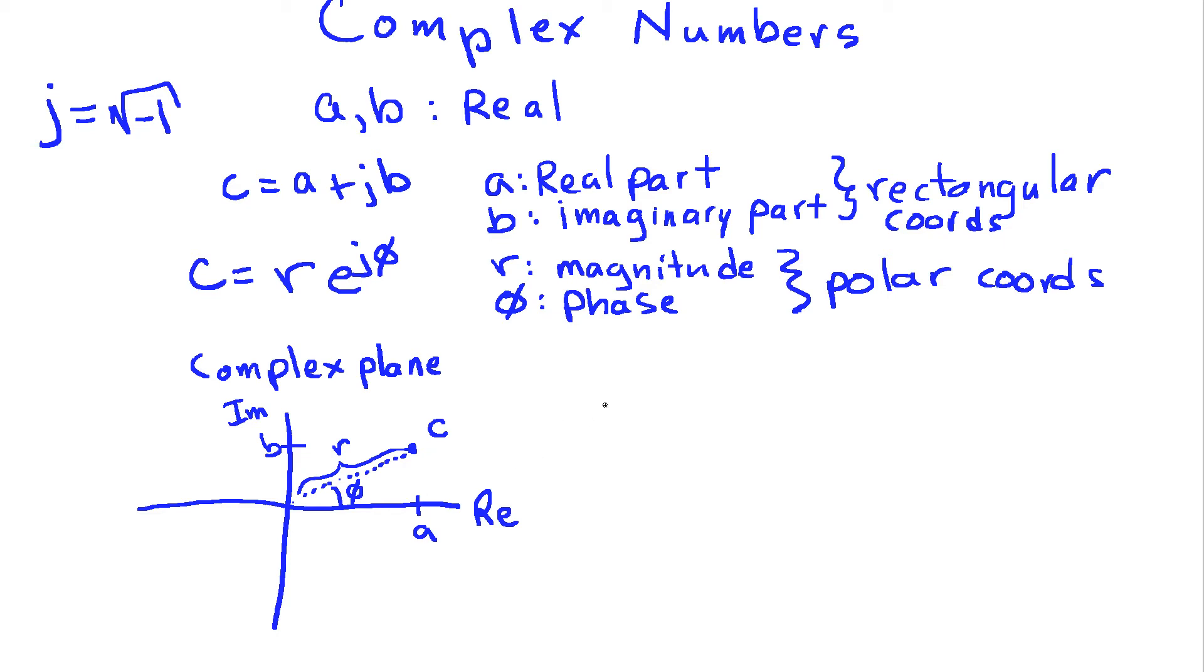Let's call the length of this distance here, we'll call that r, and then I have a phase angle phi that it makes with respect to the positive real axis. So this is how these two representations describe the complex number c. Now from this, and a little bit of trigonometry, we can easily figure out how to go between these two sets of representations, depending on what we want to do.